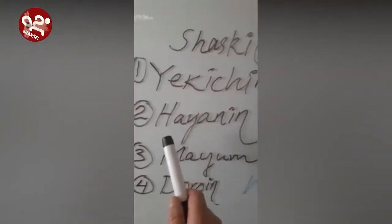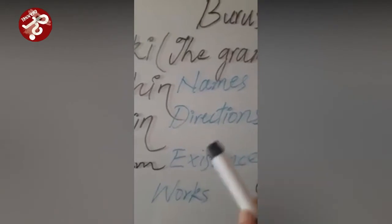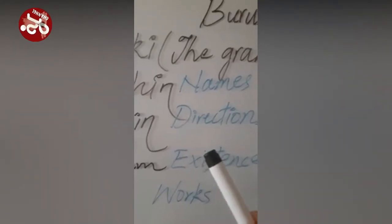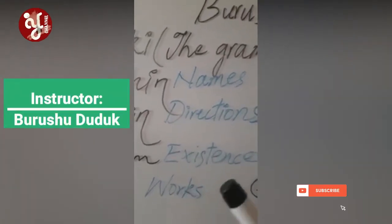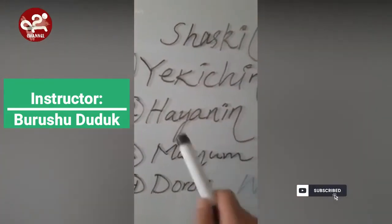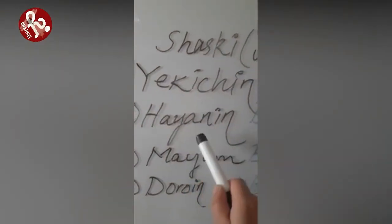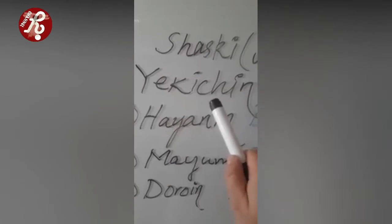The second element is 'Hayaning.' Hayaning means direction — like me, you, he, she, it — or in Burushaski: Ja, Un, Ne, Khene. These are called Hayaning because they are not names but clues or hints towards the names.